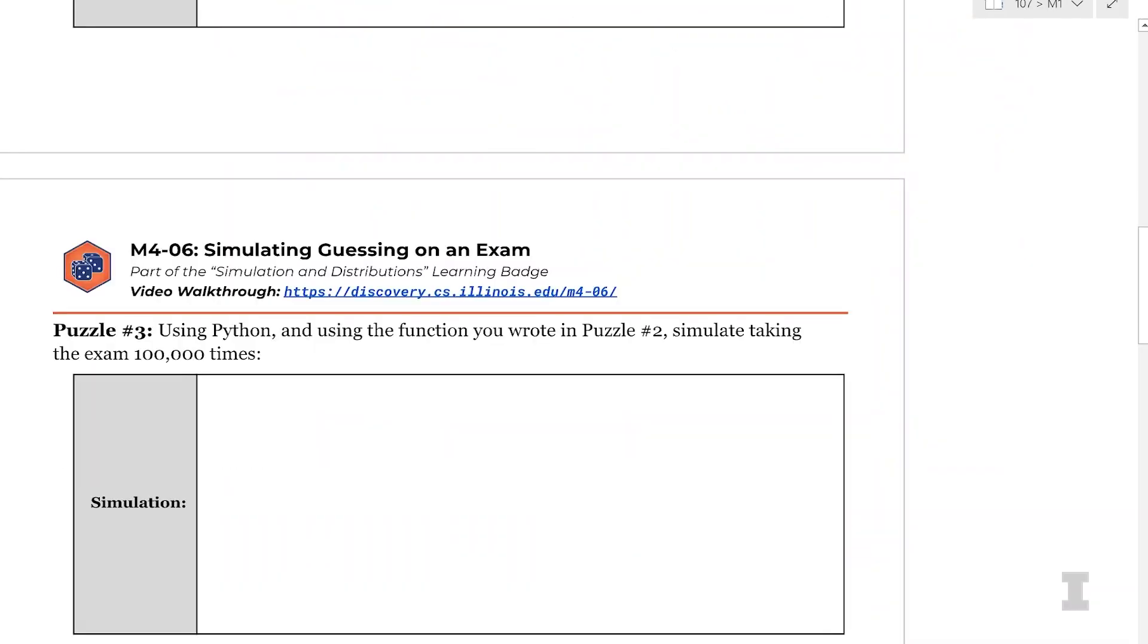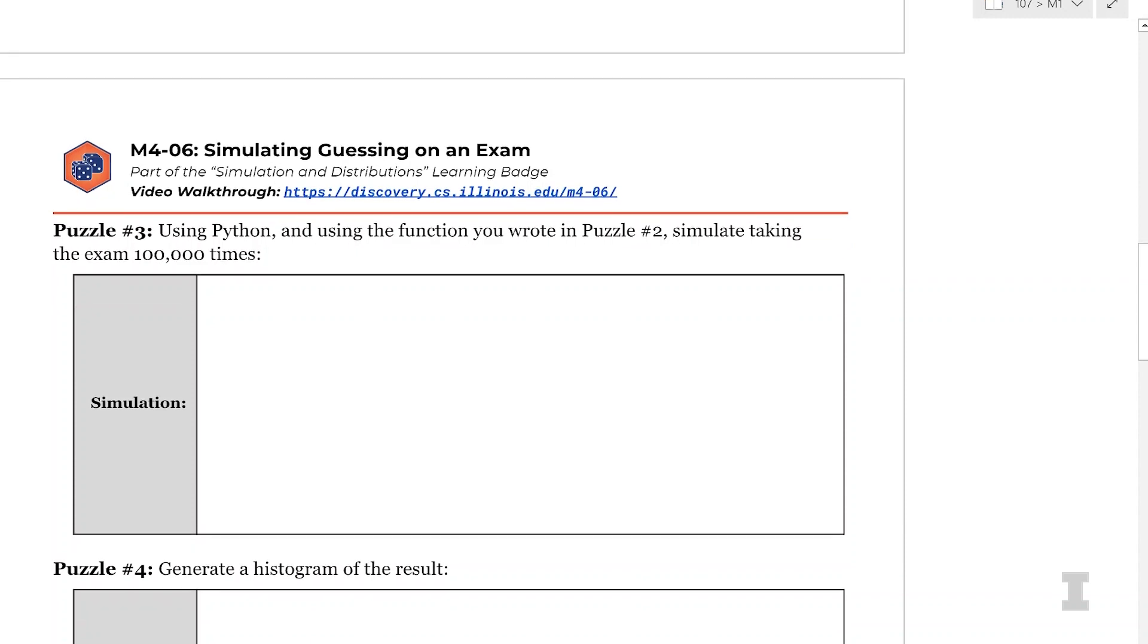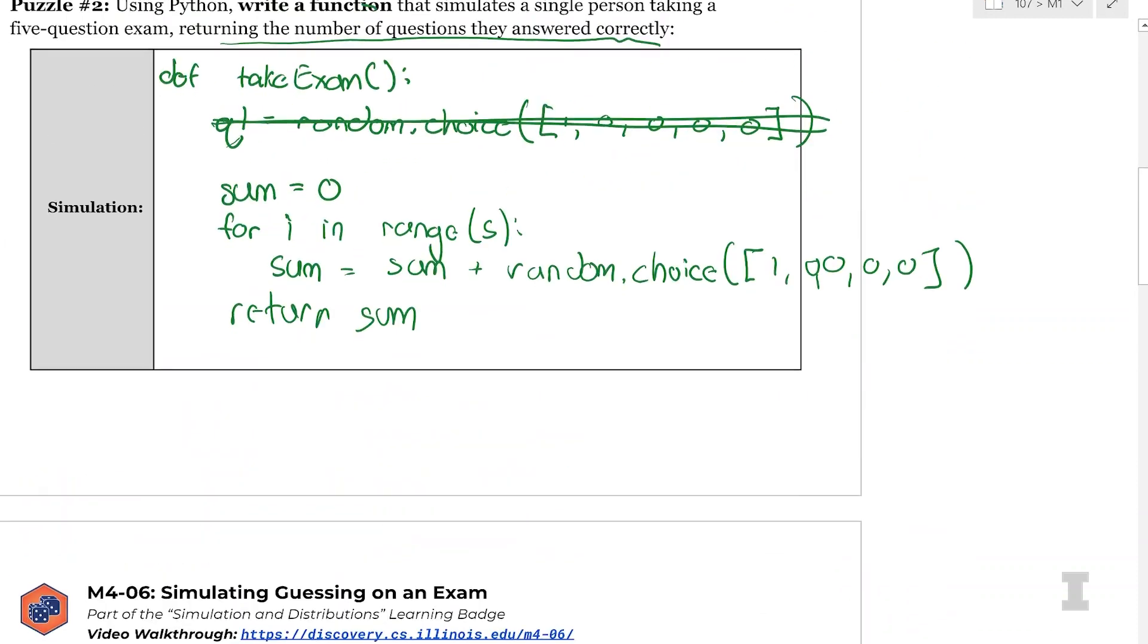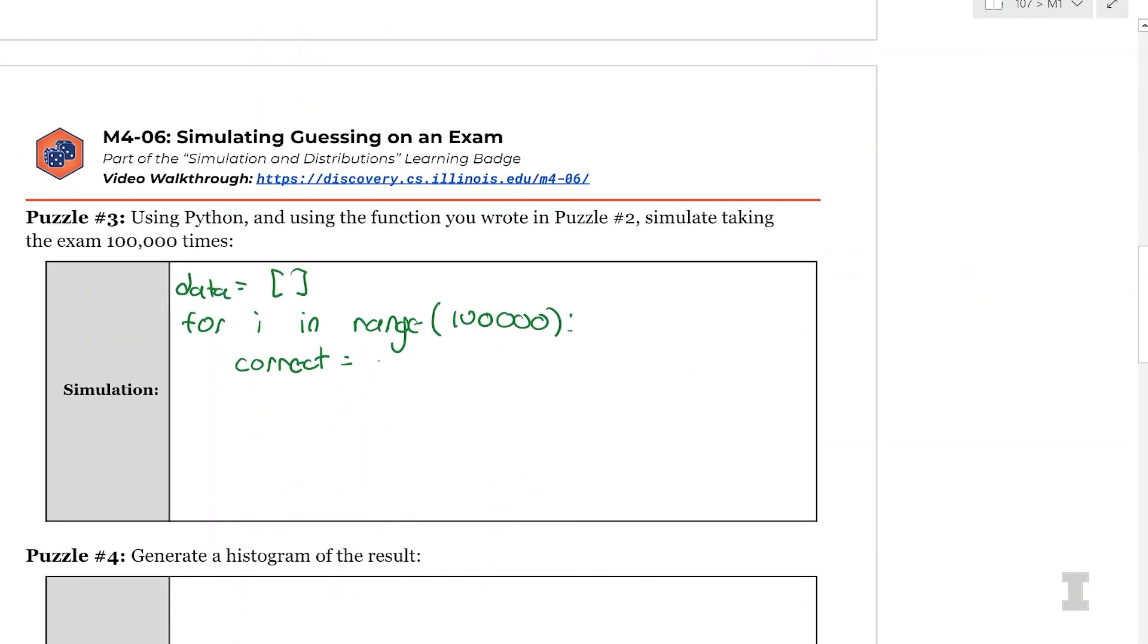So we've now had this take exam function that we can use as part of a simulation. So for puzzle three, using Python and using the function you wrote in puzzle two, simulate taking an exam 100,000 times. So here we just write our classic simulation code. So we start with data is equal to an empty list for i in range 100,000. And then I'm going to say correct, which is the number of questions I got correct, is not equal to a random number, but it's equal to the function I defined earlier. So the correct number of questions I got correct is equal to the result of the take exam function that we wrote earlier. So now we don't even have to think about what's involved in taking the exam. We just do the take exam function. And then we accumulate the correct value. D is equal to curly braces, correct in quotes, colon correct. And then data.append.